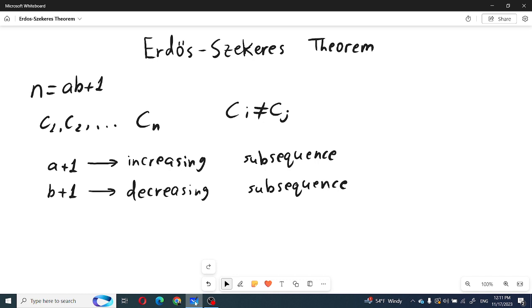To prove this, we need to use the pigeonhole principle. For each number C_j, we assign a pair of integers a_j and b_j.